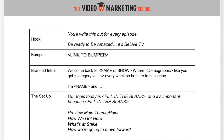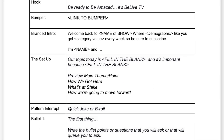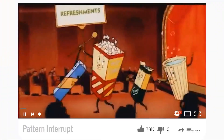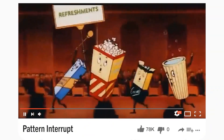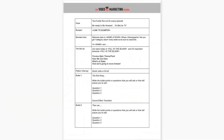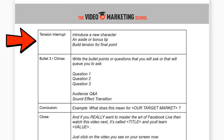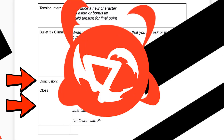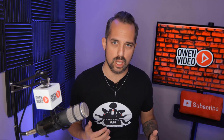The main parts of the ROS include a hook, then your bumper followed by your branded intro, then your setup followed by a pattern interrupt. And if you're not sure what a pattern interrupt is — that was a pattern interrupt. Then you have the main sections of your video, which should be divided into three to five bullet points, a tension interrupt also known as a cliffhanger, followed by your conclusion and your close. Be sure to download the ROS and watch the training that goes along with it.